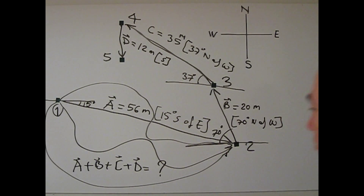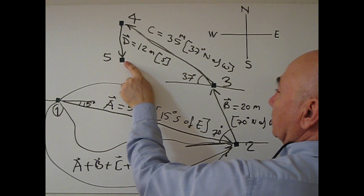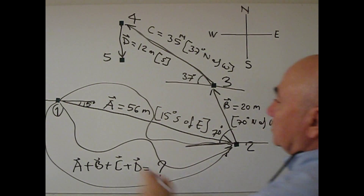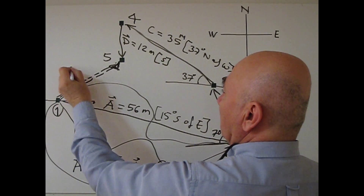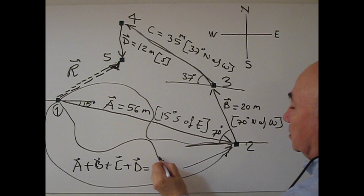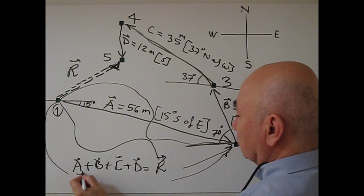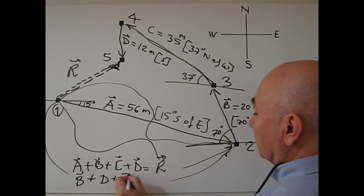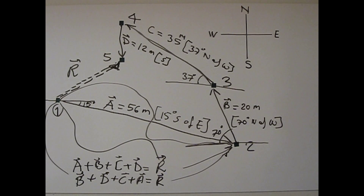My whole trip started here, then I went here, then here, and ended up here. This is my whole trip from start to finish. This will be the resultant vector — if I call this vector R, then A plus B plus C plus D must equal R. It doesn't matter if we change the order, for example B plus D plus C plus A — it again equals R. Okay, this map has become very messy, so I am going to make a clearer map.